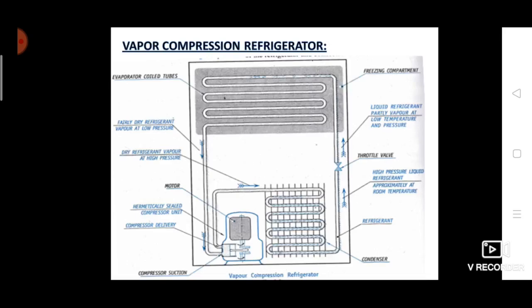The liquid refrigerant is then sent to the expansion valve or throttle valve, where the expansion process takes place. As expansion occurs, the pressure and temperature of the liquid refrigerant decrease. This low pressure, low temperature liquid refrigerant is sent back to the evaporator coil, where it again absorbs heat from the refrigerator cabinet. The cycle then continues through the compressor, condenser, and expansion valve continuously.